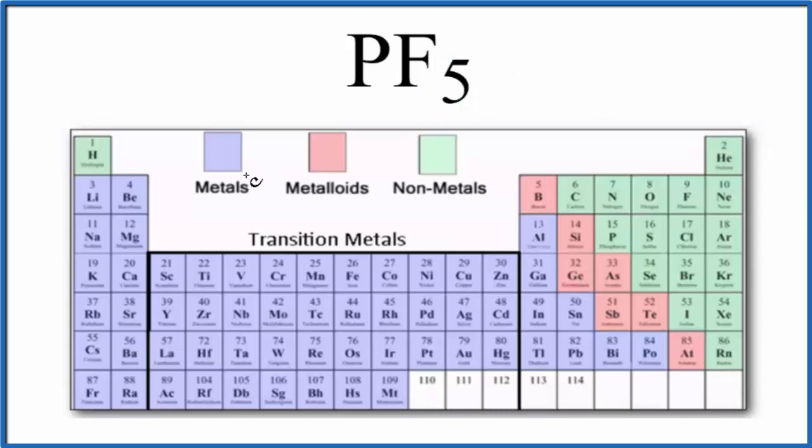So if we look at our periodic table, we have it divided into metals, metalloids, and nonmetals. We find phosphorus right here. That is a nonmetal. And then fluorine is right here. That's also a nonmetal.